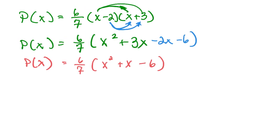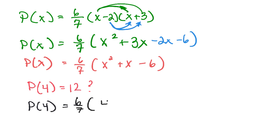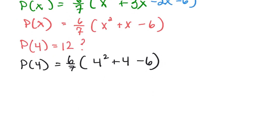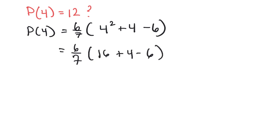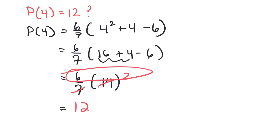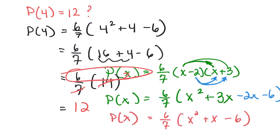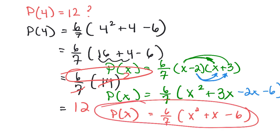Let's verify: p(4) equals 6/7 times 4 squared plus 4 minus 6 equals 6/7 times 16 plus 4 minus 6 equals 6/7 times 14. Since 7 goes into 14 twice and 6 times 2 is 12, we get p(4) equals 12. Confirmed — this is the correct polynomial.